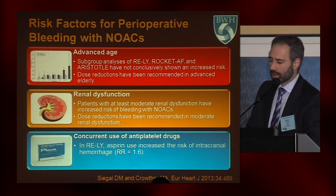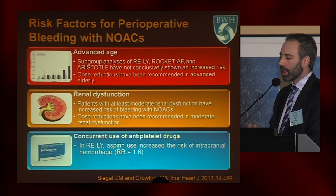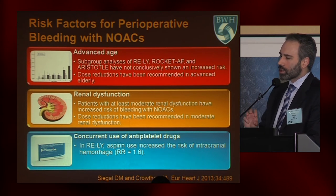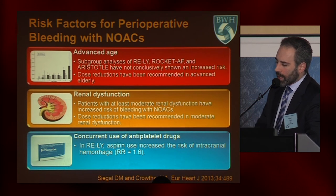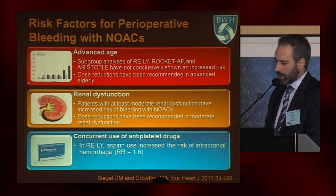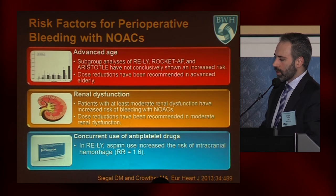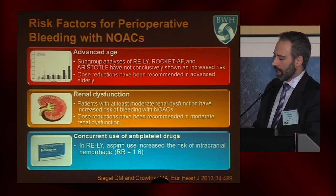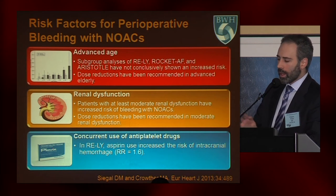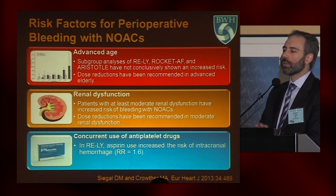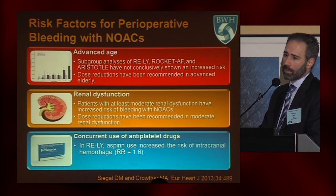Some important risk factors for perioperative bleeding with patients taking NOACs include advanced age. Initial subgroup analyses of stroke prevention and atrial fibrillation trials with the NOACs haven't conclusively shown increased risk, although all of the drugs have suggested dose reductions for advanced elderly patients. Renal dysfunction is a very important risk factor for bleeding, and dose reductions have been recommended in moderate renal dysfunction. Very importantly, concurrent use of antiplatelet agents confers at least a two-fold increased risk of bleeding when used along with NOACs, so it's critical to ask whether patients need to be on an antiplatelet agent if they're already on anticoagulation — oftentimes the answer is no.